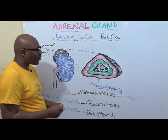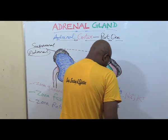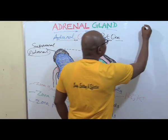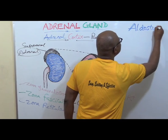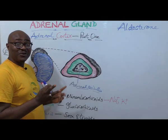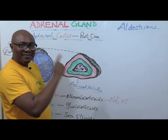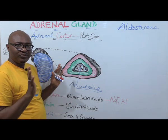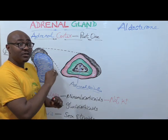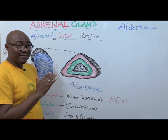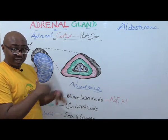The main hormone from the zona glomerulosa is called aldosterone. When we talk about mineralocorticoids, you are dealing with aldosterone. Aldosterone has a nickname — it has been nicknamed the life-saving hormone. Why? Because within three days to two weeks without aldosterone, a person can die, because of the very vital functions it has in the body.